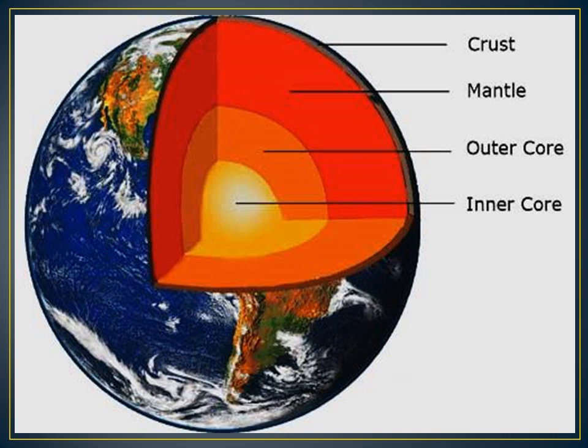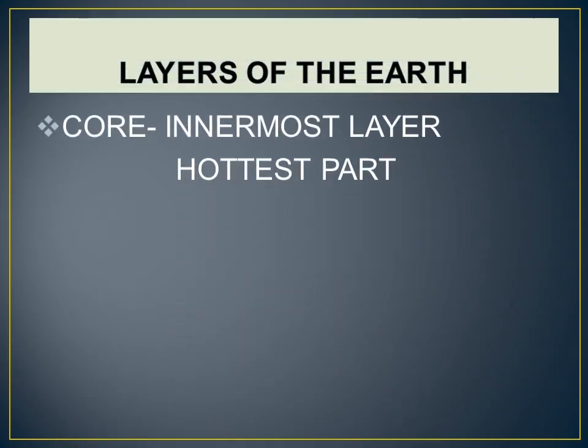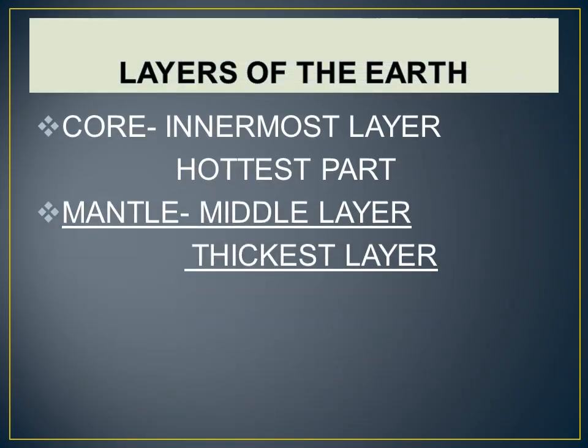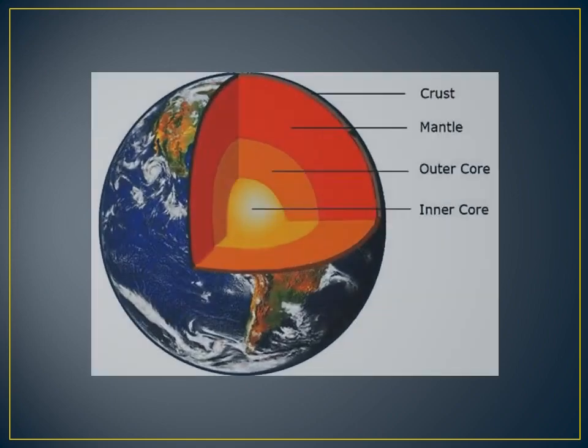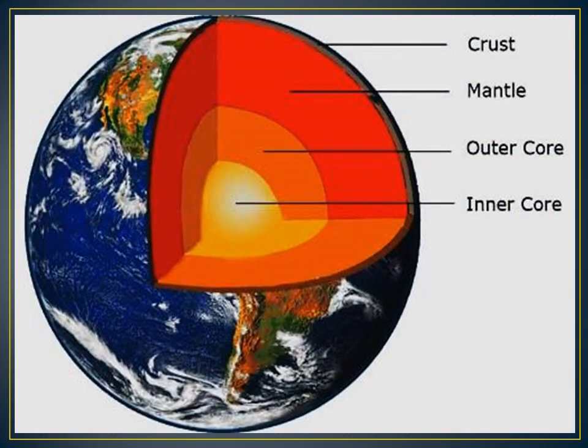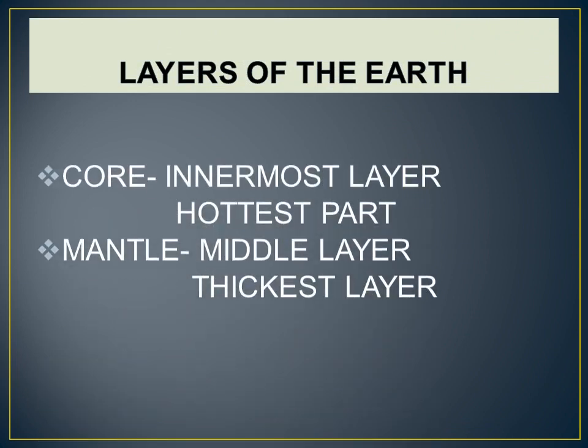Now the second layer is the mantle. The middle layer of the Earth is called the mantle. It is the thickest layer, which is made of rocks rich in minerals such as iron and magnesium. Now we are going to read about the third layer.